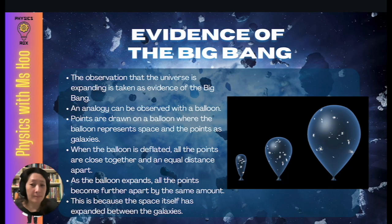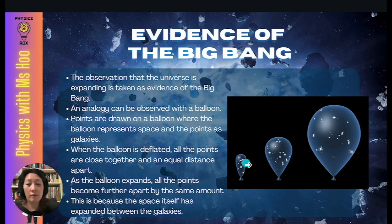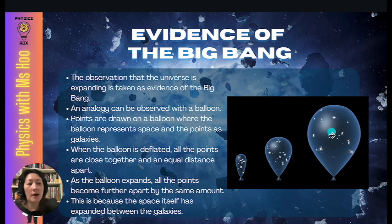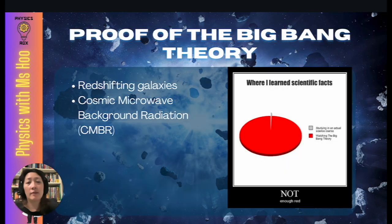What evidence is there of the Big Bang? The observation that the universe is expanding is taken as evidence. An analogy can be observed with a balloon — the balloon represents space while the points on it represent galaxies. When deflated, all points are close together and equidistant. As the balloon expands, all points become further apart by the same amount because the space itself has expanded between the galaxies. The two key proofs of the Big Bang theory are red shifting galaxies and Cosmic Microwave Background Radiation, or CMBR.